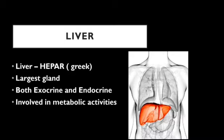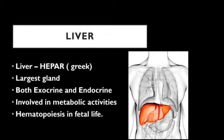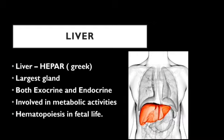The liver also carries out many metabolic activities and thereby produces heat, so the liver is helpful in maintaining body temperature. In fetal life, the liver is very large in size because it carries out hematopoietic activity — that means it produces blood cells in fetal life. Later on it loses this hematopoietic activity and thereby regresses in size.